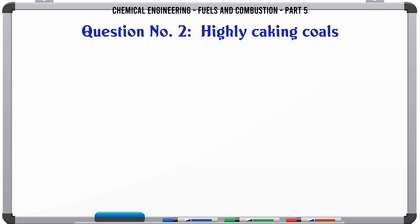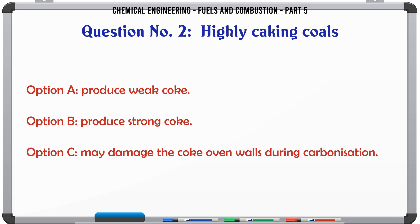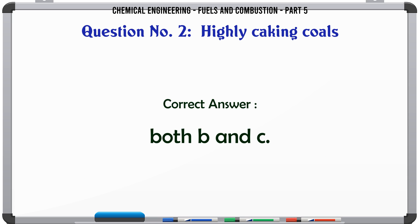Highly caking coals. A. Produce weak coke. B. Produce strong coke. C. May damage the coke oven walls during carbonization. D. Both B and C. The correct answer is both B and C.